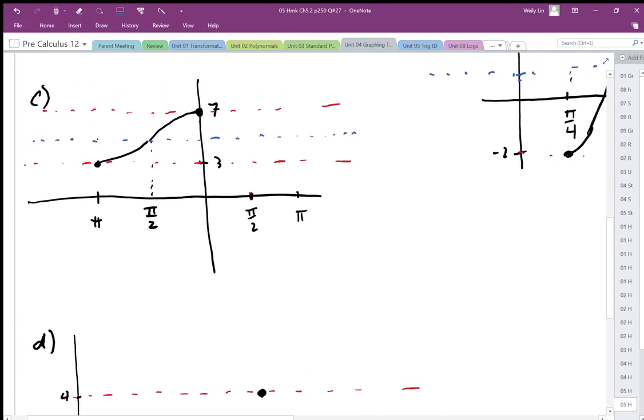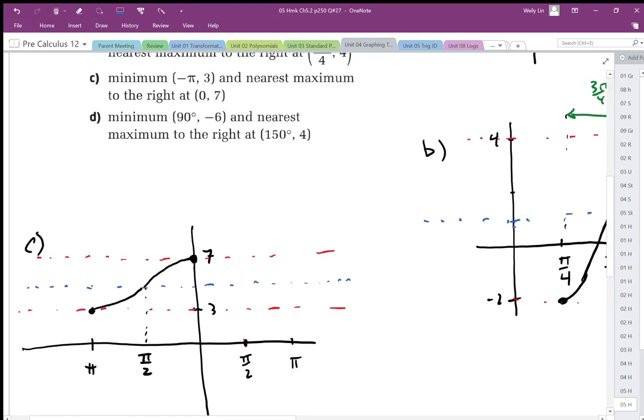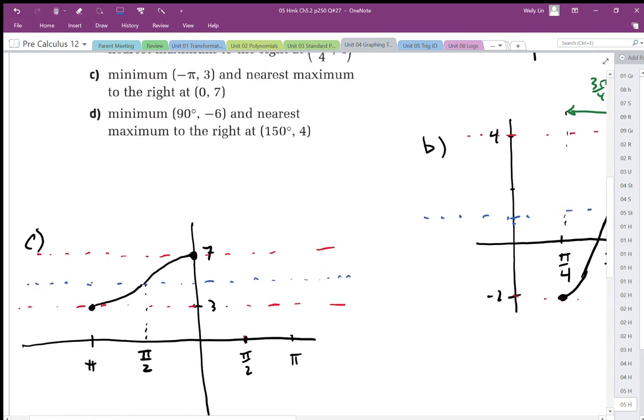Part C: We have the minimum value at negative pi over 3. So here's negative pi here, negative pi over 2. Negative pi over 3 is at that black dot, and the nearest maximum to the right is at 0, 7, that's the y-intercept.